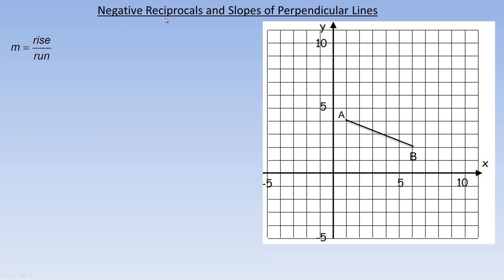In this tutorial we're going to take a look at what negative reciprocals mean and how that pertains to slopes of perpendicular lines. We're going to start with line segment AB. Remember that slope is rise over run, so to go from A to B, I can go down 2 and to the right 5. The down 2 is negative 2 — that's the rise — and the run across is 5, so the slope of AB is negative 2 fifths.